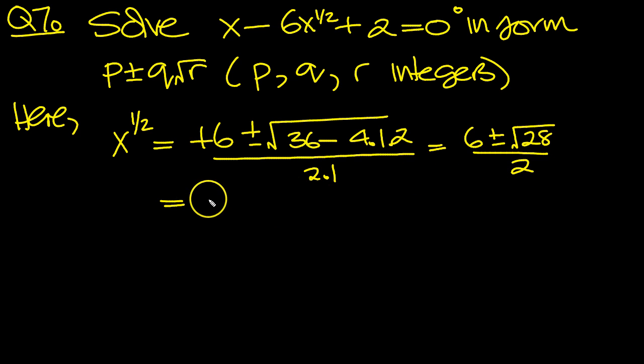Divide by 2 here, 6 over 2 is 3, plus or minus. And then root 28 is 4 times 7, so that's root 4 times root 7, and that 2 will cancel with the root 4. So we're just left with root 7.